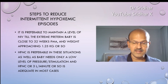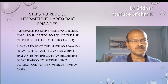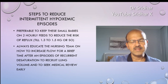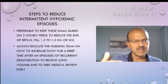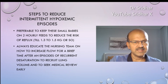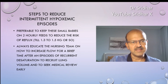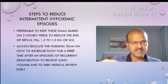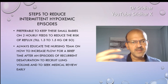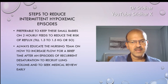Most units continue non-invasive ventilation at a low setting in extreme premature babies until they reach close to 32 weeks post-menstrual age and a weight of approximately 1.25 kg — at which point chest wall compliance improves and reflux episodes cause less significant lung volume closure. It is also preferable to keep these small babies on 2-hourly feeds to reduce the risk of reflux, moving to 3-hourly feeds when weight reaches 1.3 to 1.5 kg. Always educate the nursing team on how to briefly increase flow or pressure on non-invasive ventilation after episodes of recurrent desaturation, to recruit lung volume before hypoxemia causes further problems.